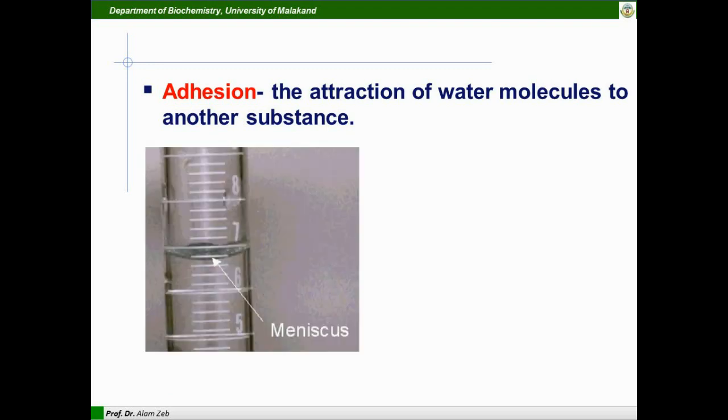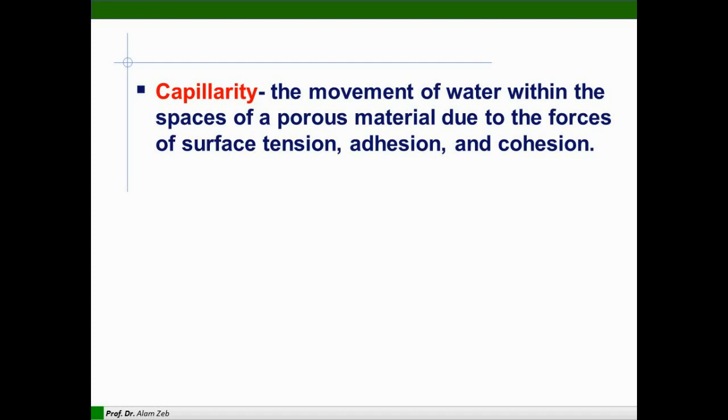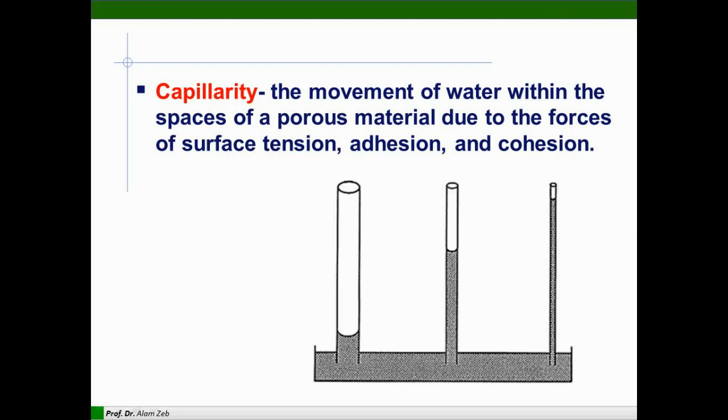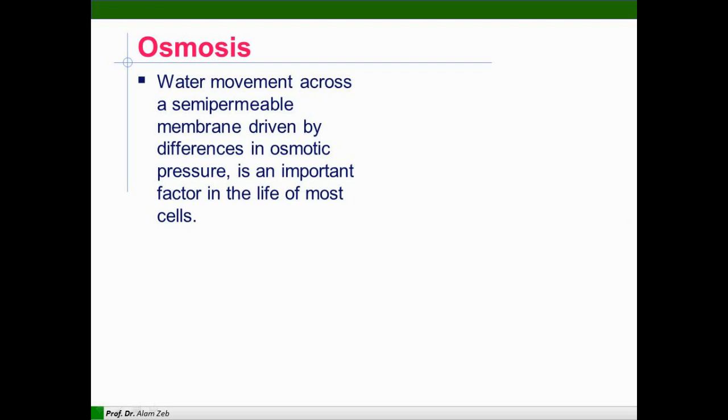Adhesion is the attraction of water molecules to another substance. Water forms a specific meniscus. There are two types of meniscus, concave and convex. Water in this case forms a concave meniscus. Another property is capillarity or capillary action, the movement of water within the spaces of a porous material due to the forces of surface tension, adhesion, and cohesion. Water flows in this particular tube, the capillary tube, and this is the reason that water climbs in plants.